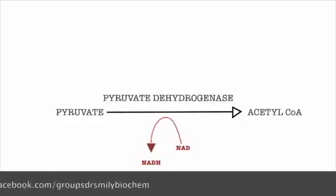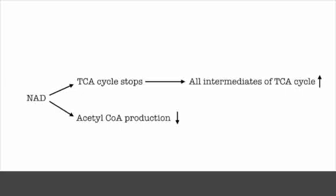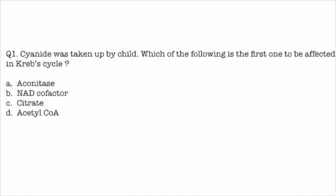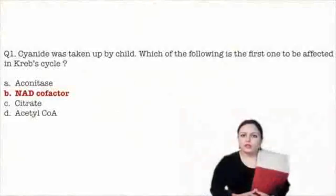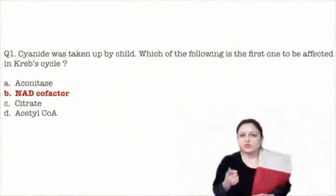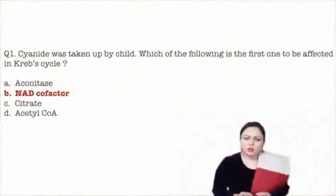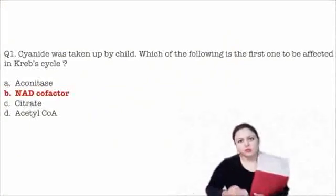In the link reaction, pyruvate forms acetyl-CoA with the help of enzyme pyruvate dehydrogenase; this reaction also requires NAD, and when NAD gets depleted, acetyl-CoA production also decreases. So summarizing: when NAD gets depleted, TCA cycle will stop and all intermediates of TCA cycle will be increased, while acetyl-CoA production decreases. Aconitase is an enzyme of TCA cycle — not affected. Citrate is an intermediate that is actually increased. Best answer is NAD co-factor, as acetyl-CoA and citrate are affected later.